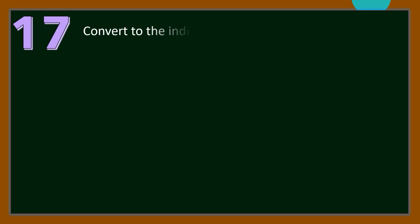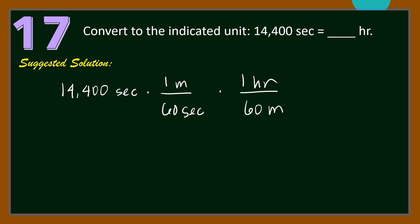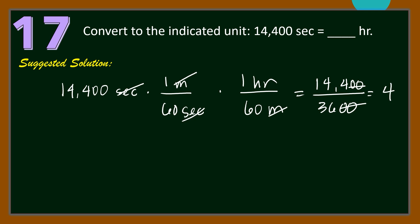Number 17. Convert to the indicated unit: 14,400 seconds equals how many hours? For our solution, let us multiply 14,400 seconds by the ratio 1 minute over 60 seconds to cancel seconds, then convert to hours using 1 hour over 60 minutes. We get 14,400 over 3,600, which simplifies to 144 over 36, equal to 4. The answer is 4 hours.